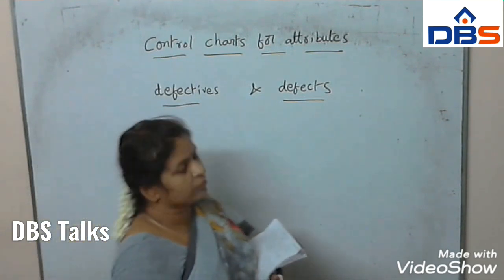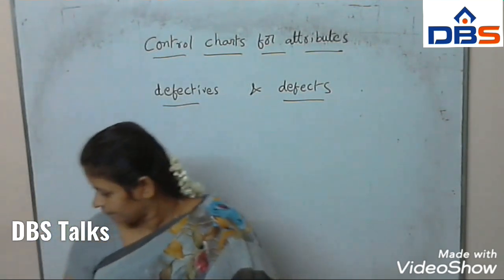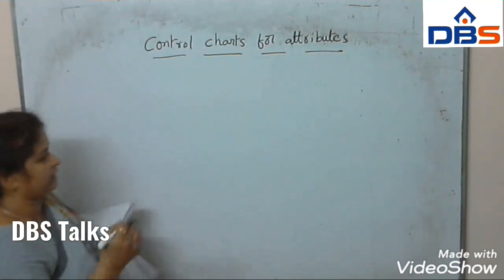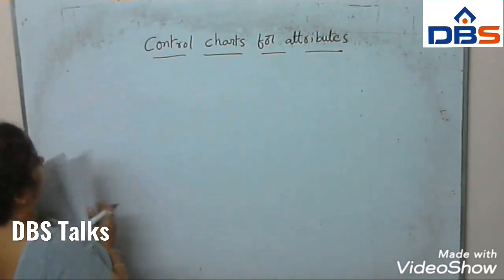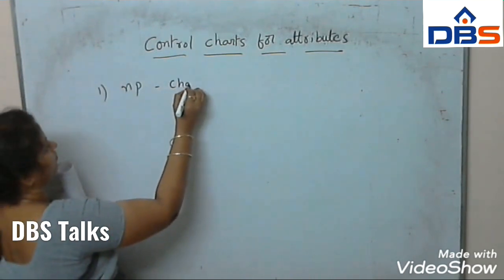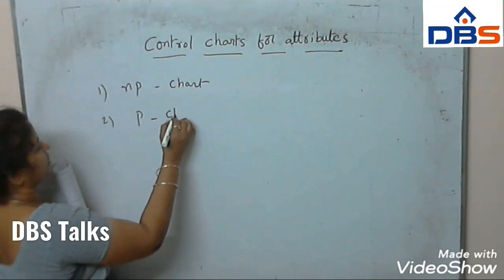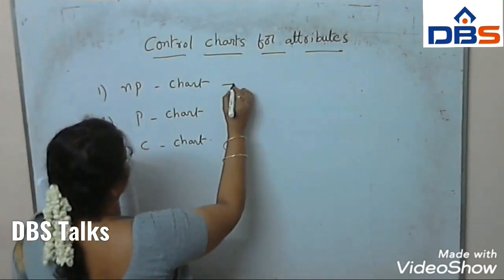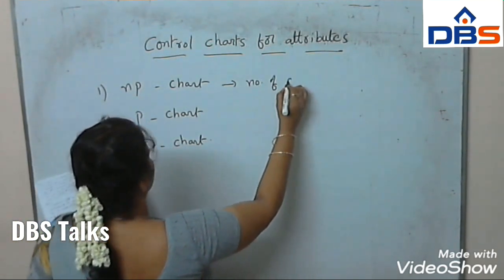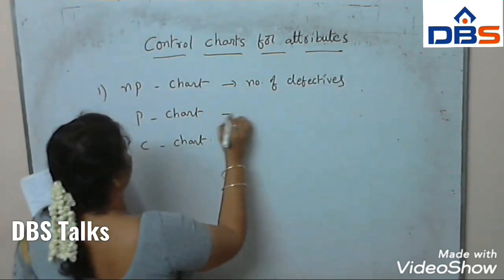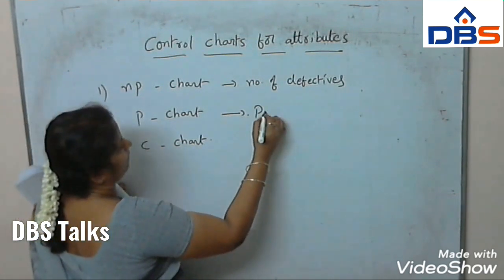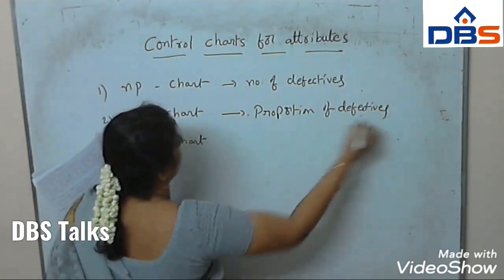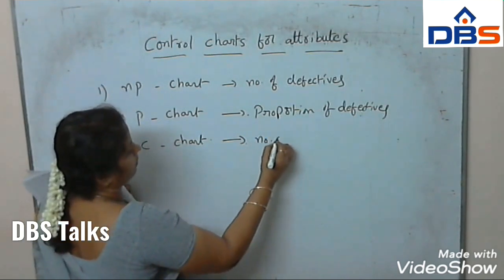Next, we will go to the control charts for defects and defectives. There are three types of control charts. First one is NP chart, second one is P chart, and C chart. NP chart is based on number of defectives. P chart is based on proportion of defectives. C chart is based on number of defects.